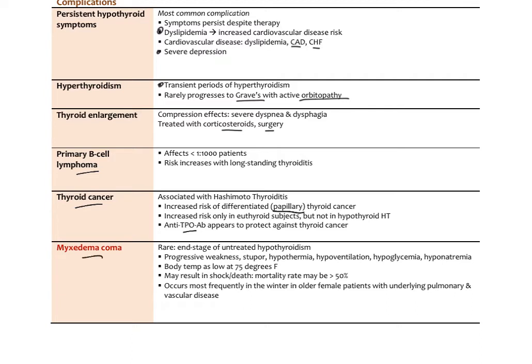The medical emergency of myxedema coma is the end stage of untreated hypothyroidism. The most common presentation is an elderly person, perhaps in a nursing home, who develops progressive weakness, stupor, hypothermia, hypoventilation, hypoglycemia, and hyponatremia. Core body temperature can drop as low as 75°F, resulting in shock and death. Mortality is over 50%. The most susceptible patient is an older person living alone in poor heating conditions in winter, possibly with underlying pulmonary disease.